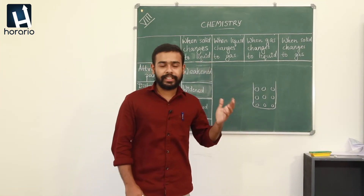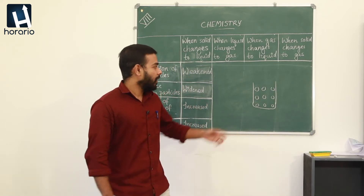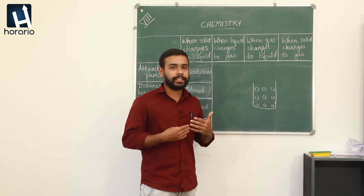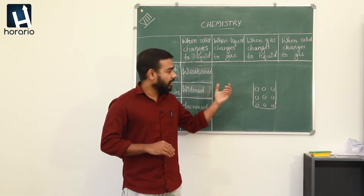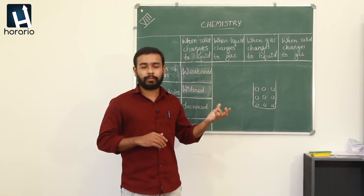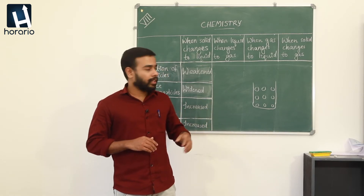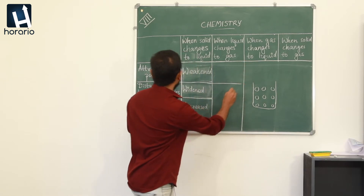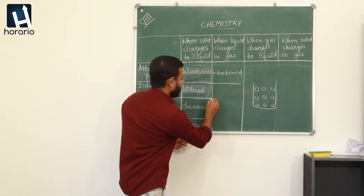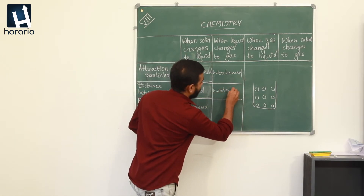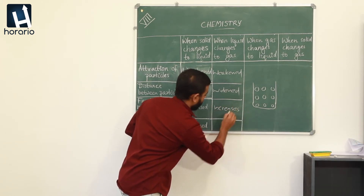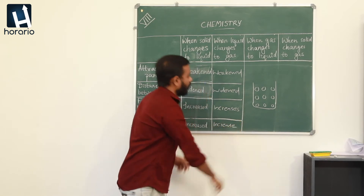Next is about evaporation — that is when liquid changes to gas with the absorption of heat energy. This is how particles are arranged inside liquids. As the particles start to absorb heat energy, the attraction between particles weakens and the distance between particles increases. They create extra space, so they can make a greater number of movements and faster movements. The kinetic energy will also increase. In the case of evaporation, the attraction between particles further weakened, the distance between particles widened, and the freedom of movement and kinetic energy increases.